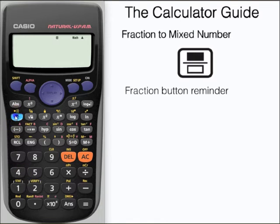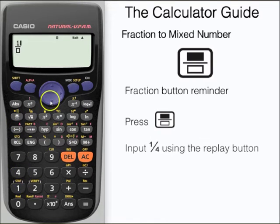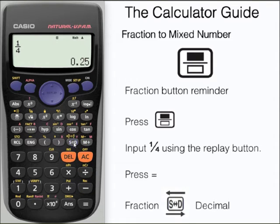First, let's just have a reminder of the fraction button. Press the fraction button and input a quarter using the replay. Press equals and we have a quarter displayed here. Remember we can use the SD button to change between a fraction and a decimal.